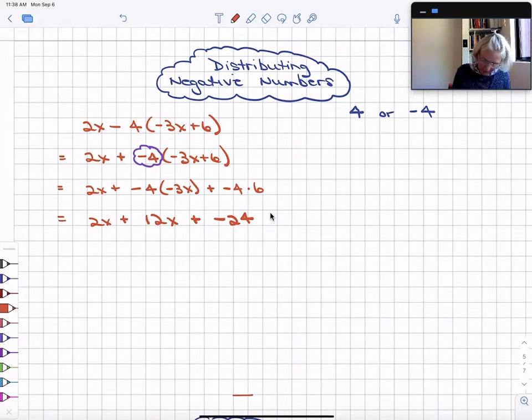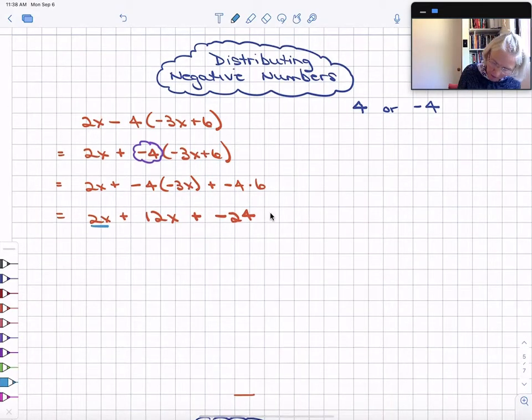Next step is I'm going to simplify, do two steps in one. I'm going to combine my like term, and I'm also going to handle simplifying this double sign right here.